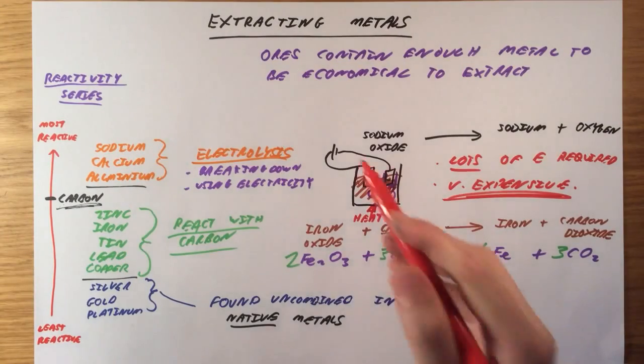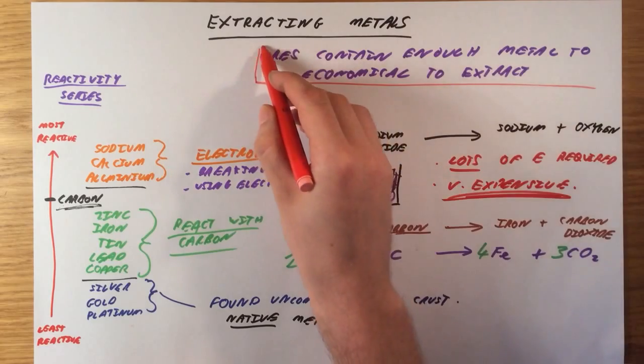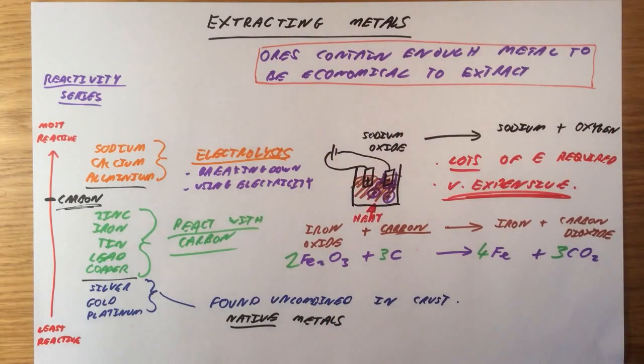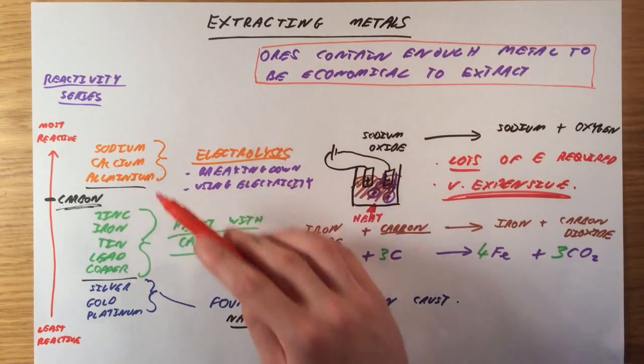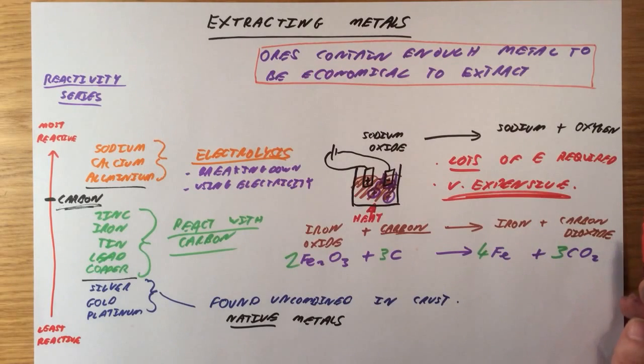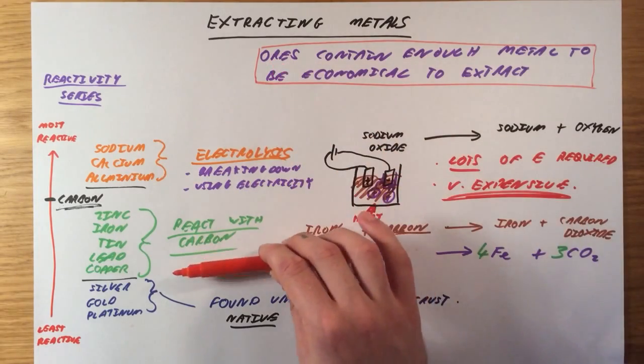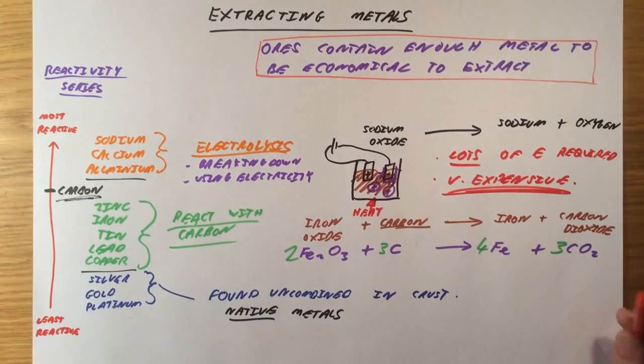One last little note here. Since all these ores are dug out of the ground, they're effectively non-renewable. Once we've dug up the ore once, we can't then use it to make the metal again. This means it's really, really important to recycle metals when we've finished using them. That's going to conserve resources, and it's also going to take a lot less energy to recycle a metal than it takes to produce more from the ore. We don't have to go through either of these processes again to extract the metal if we're recycling it.